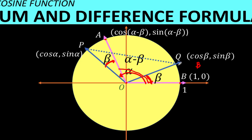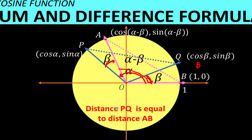Let's connect point P to point Q to form triangle POQ, and connect point A to point B to form triangle AOB. These two triangles are congruent because the pink triangle is formed by rotating the blue triangle clockwise. Therefore, the distance PQ, the hypotenuse of the blue triangle, is equal to the distance AB, the hypotenuse of the pink triangle.